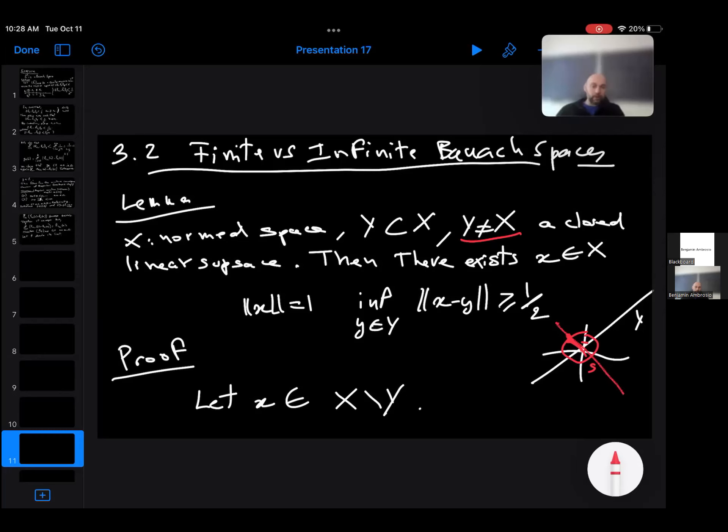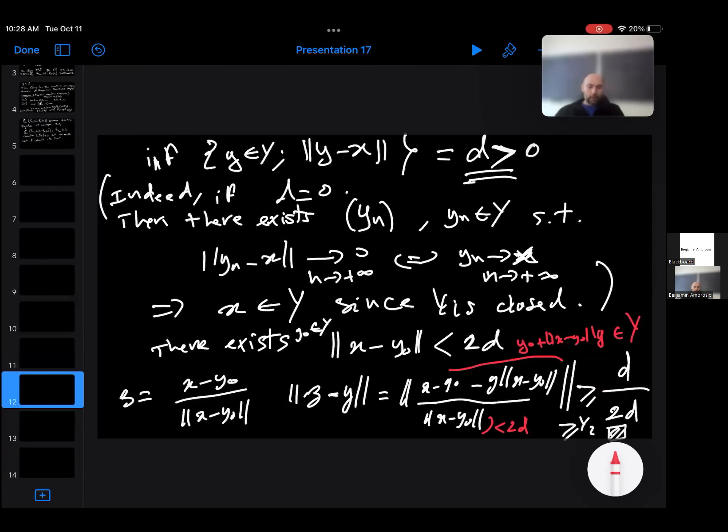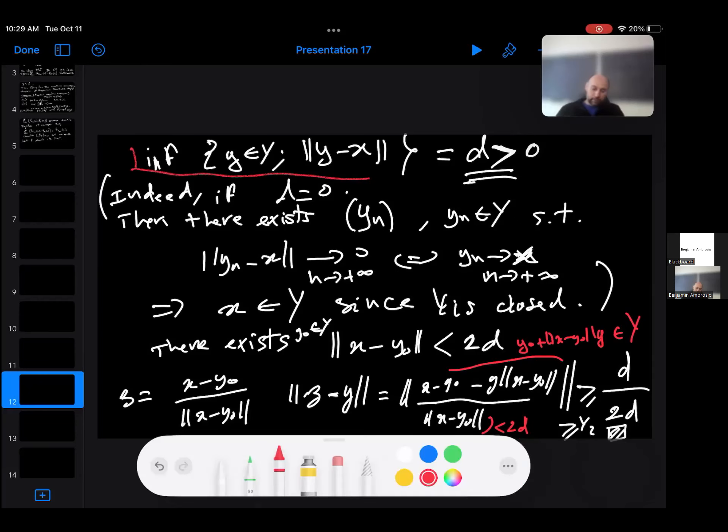So how do you prove this lemma? You just pick x which is not in Y. And since it's not in Y, you have that this quantity is positive. So you can find a positive d such that this holds. This comes from the fact that Y is closed.